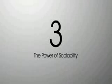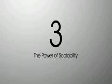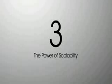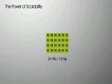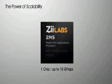Let's move on to the next incredible quality: the power of scalability. What do we mean by scalability? Just like stem cells, the basic building block for a ZMS chip is a processing element, or PE. We will now show you how we can scale up or build an incredibly powerful computer when we chain PEs together to form larger and larger structures. This ability is at the heart of the ZMS architecture. The basic building block of a ZMS chip is a PE. One chip consists of 24 PEs, and one chip equates to 10 gigaflops of processing power.